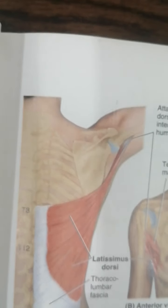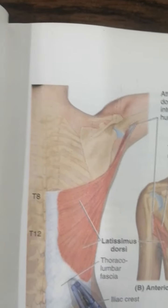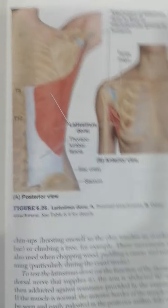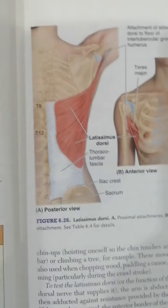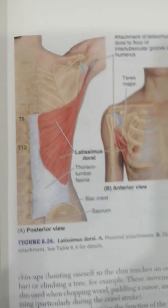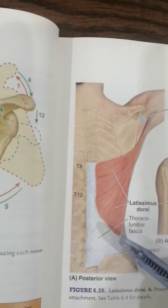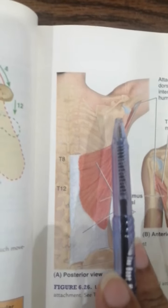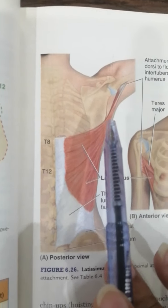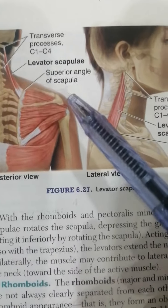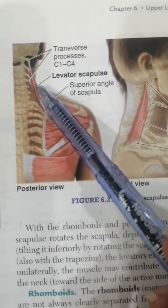The nerve supply of latissimus dorsi is the thoracodorsal nerve. This completes the superficial posterior axio-appendicular muscles — trapezius and latissimus dorsi. Now we move towards the deep posterior axio-appendicular muscles, the first of which is the levator scapulae.